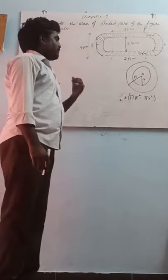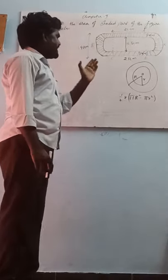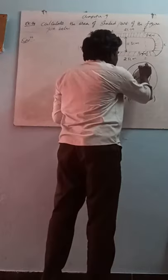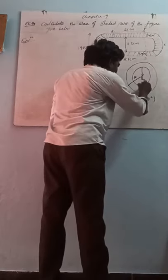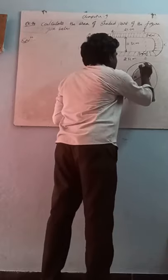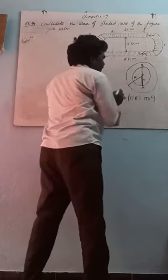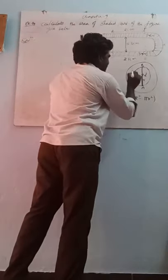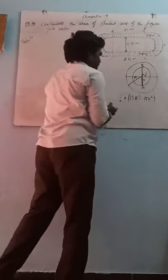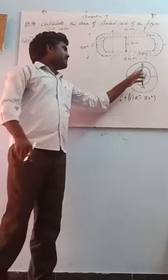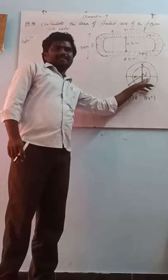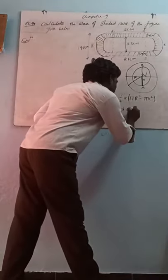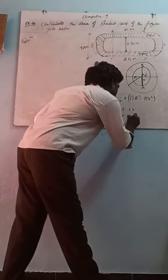Diameter means: a line joining any two points on a circle which passes through the center of the circle is called the diameter. Diameter is nothing but twice the radius. So d equals 2r, which means radius equals d by 2. Capital D equals capital R, so capital R equals D by 2.